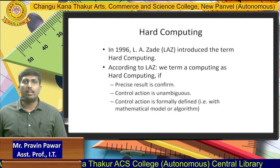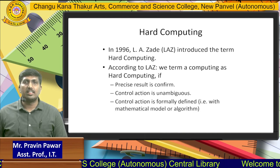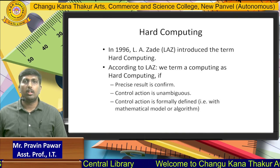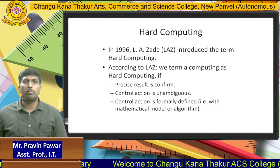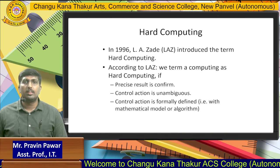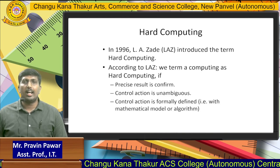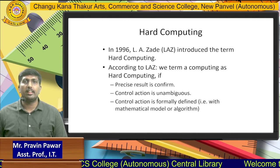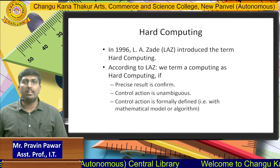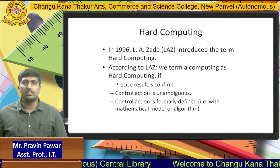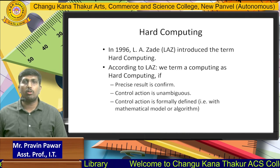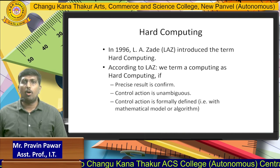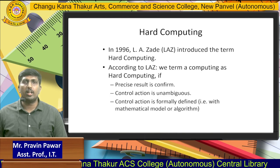Now we are looking towards hard computing. In 1996, Zadeh is the person who specifically defined hard computing. According to this definition, if we get a precise or confirmed result, that is part of hard computing. The control action is unambiguous, and the control action is formally defined either by a mathematical model or algorithms — these are the three parts of hard computing.